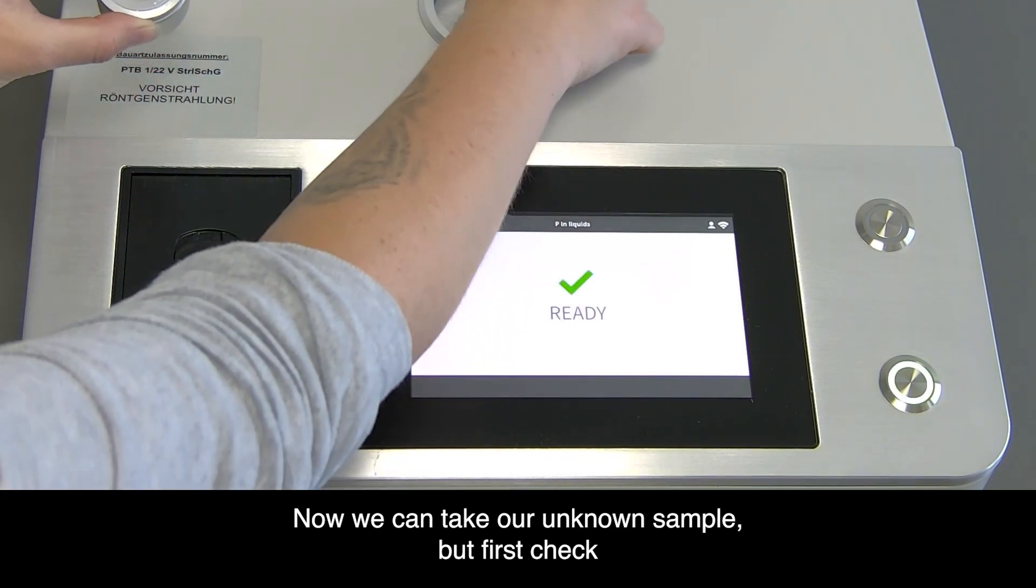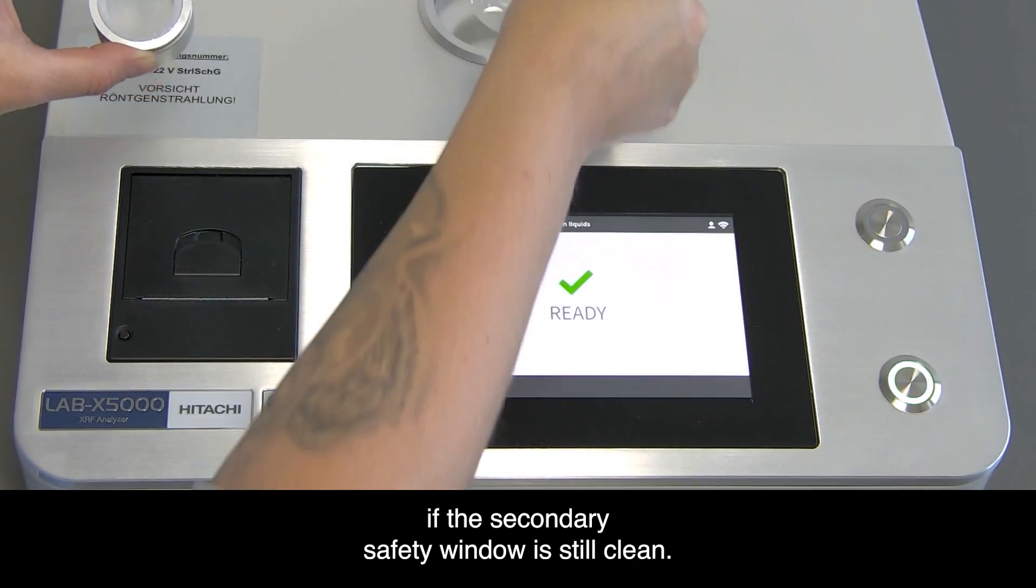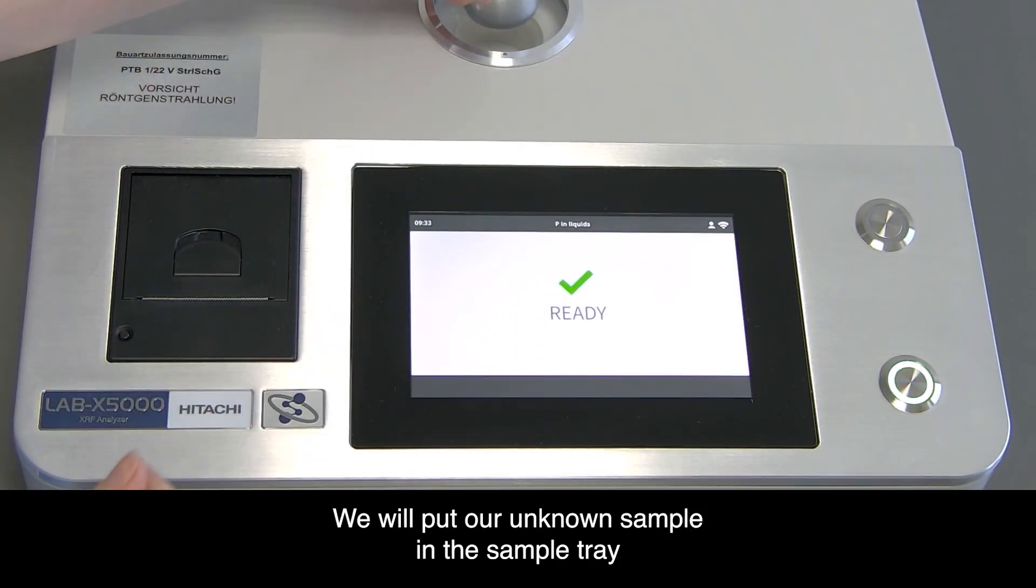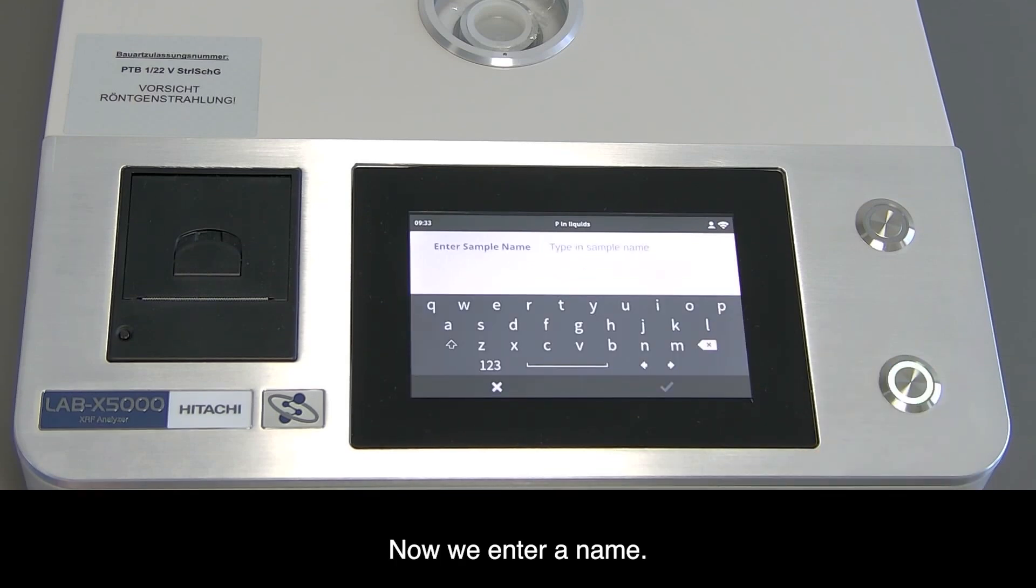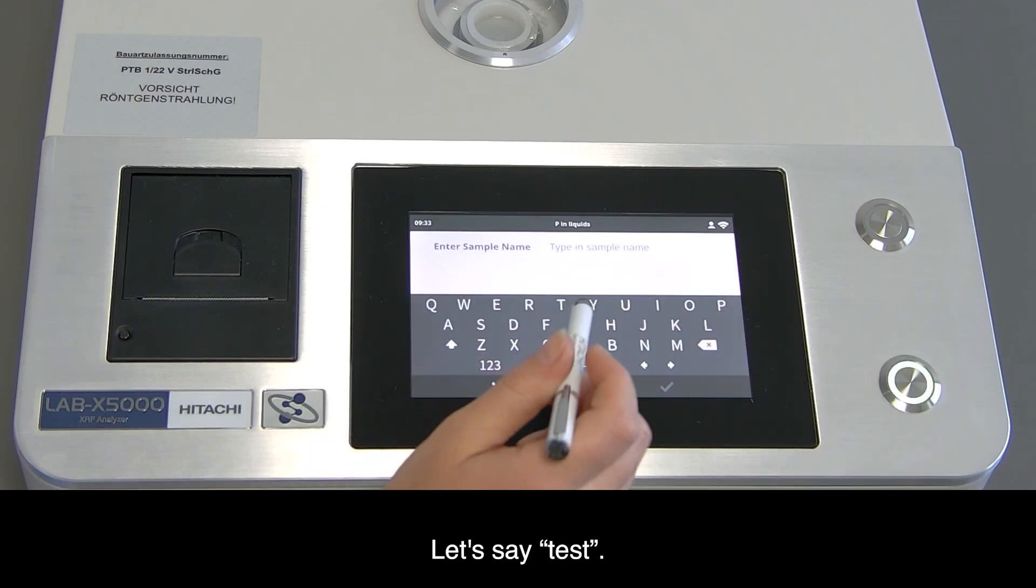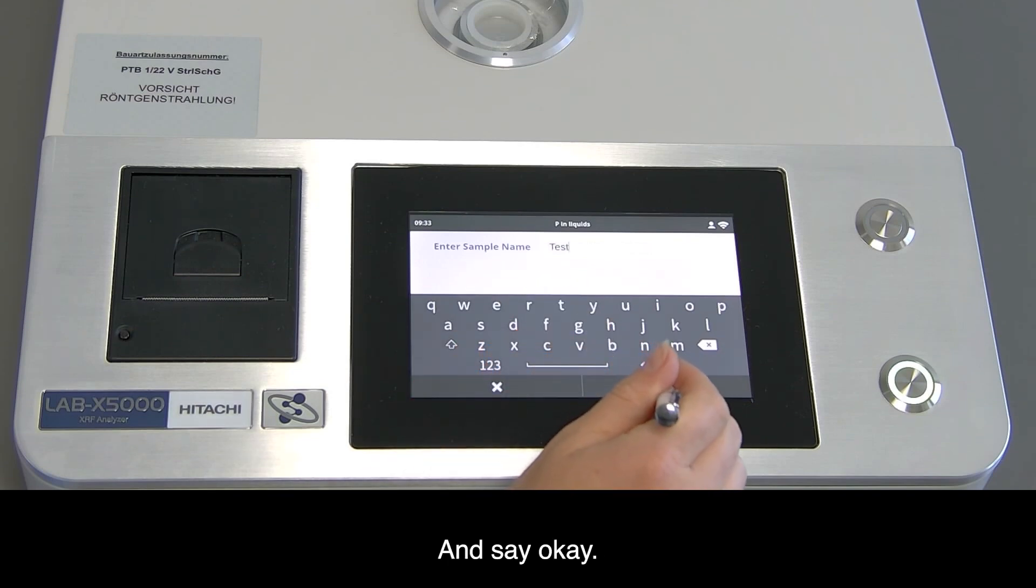First check if the secondary safety window is still clean. We'll put our unknown sample in the sample tray and press the start button. Now we enter our name - let's say 'test' - and say okay.